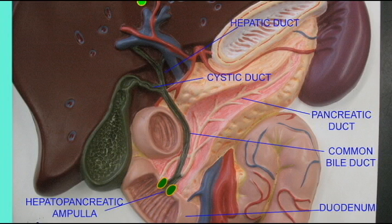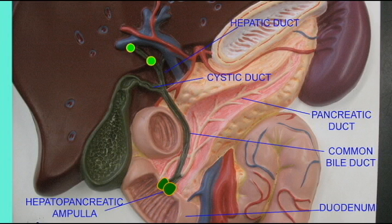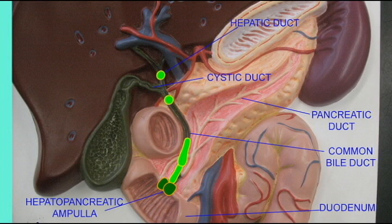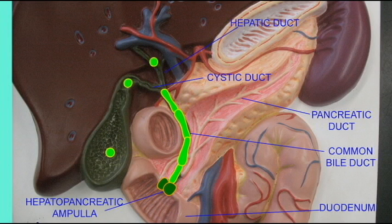When there is no food in the small intestine, a sphincter at the hepatopancreatic ampulla closes. The bile which passes from the hepatic ducts through the common bile duct backs up into the cystic duct and from there into the gallbladder. The gallbladder then concentrates the bile.